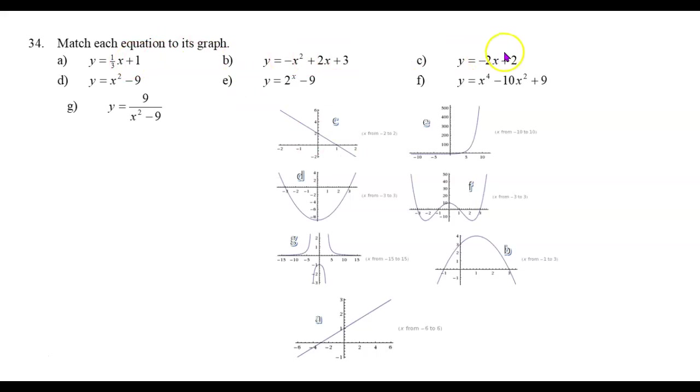Finally we have some equations and some graphs. Now without even looking at the graphs I can tell you that equation a is going to be a straight line with a slope of one-third and a y-intercept of one because it's set up in y equals mx plus b format.